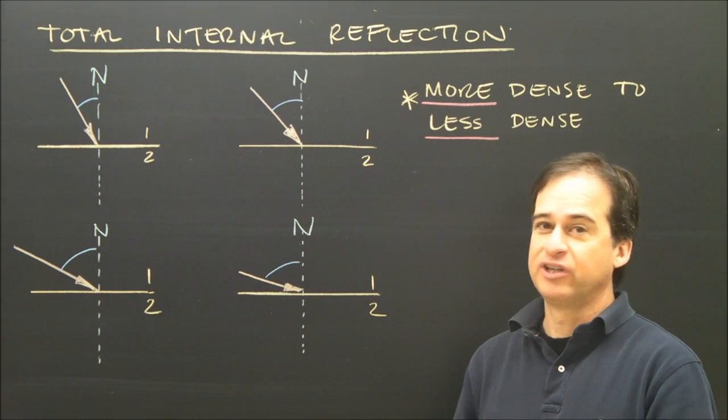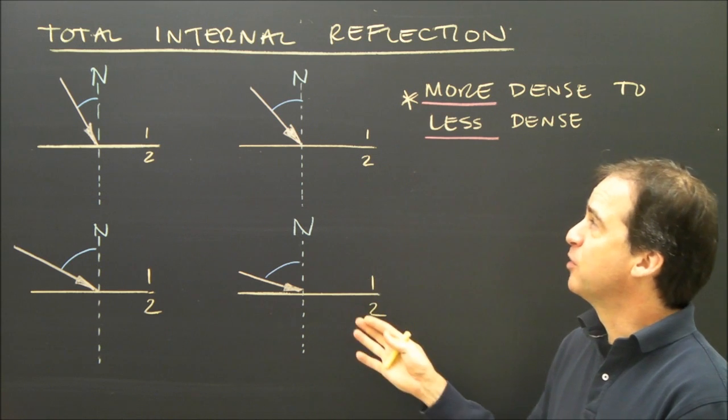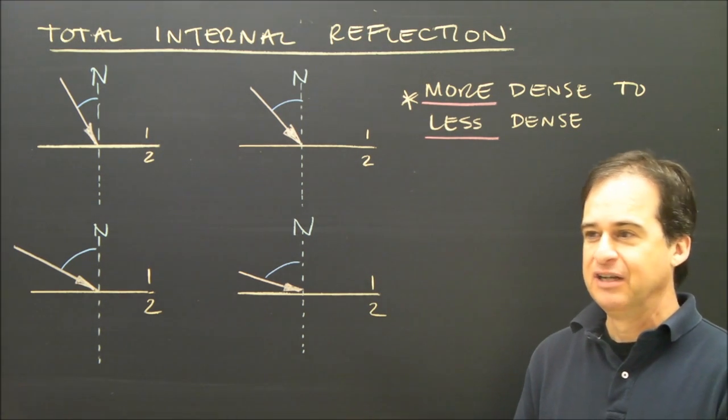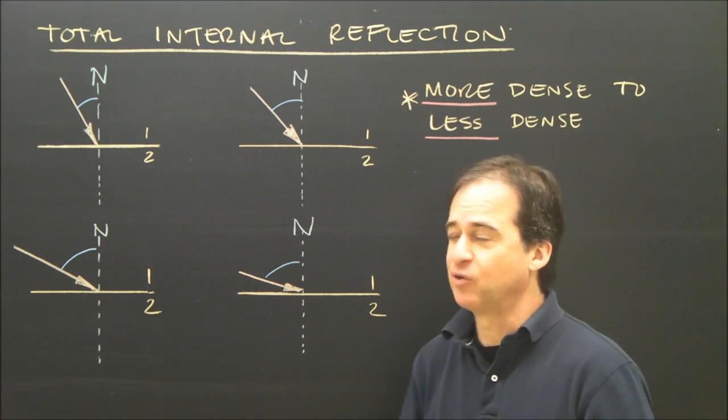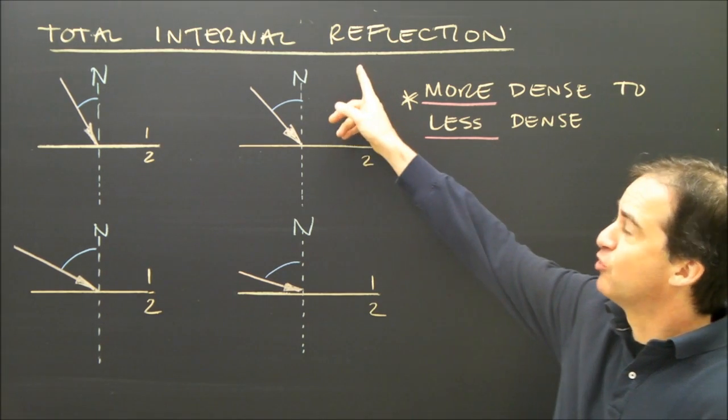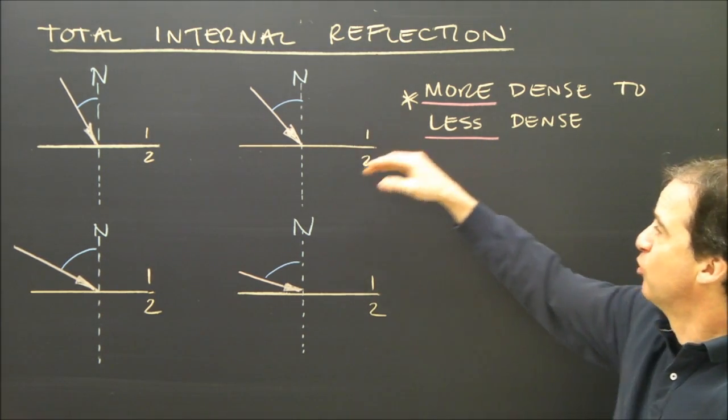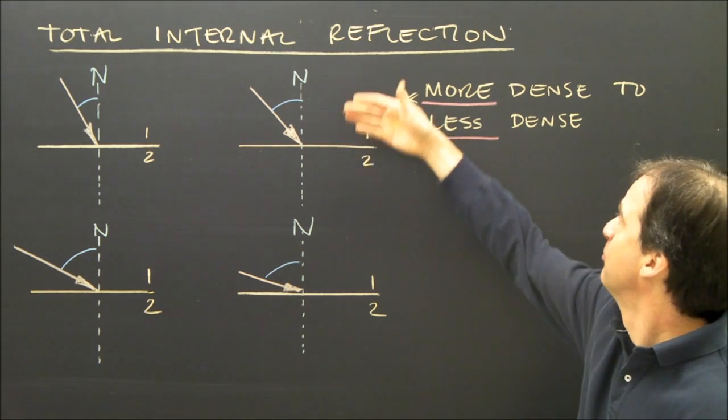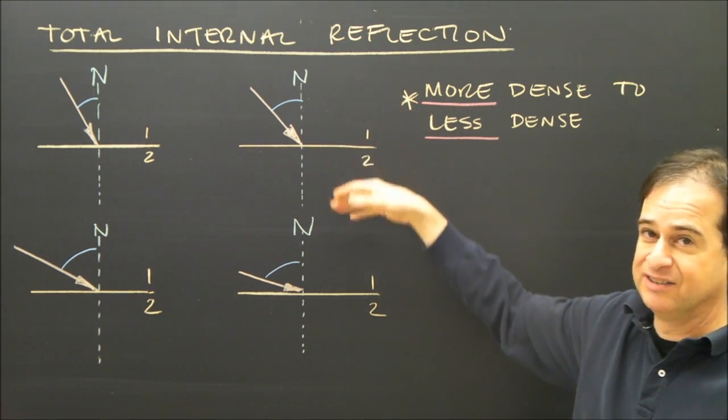Let's look at something called total internal reflection. This is a very important part of refraction and it happens only in a very specific way. For total internal reflection, this only works when light is going from one material to another, but the first material is more dense than the other.